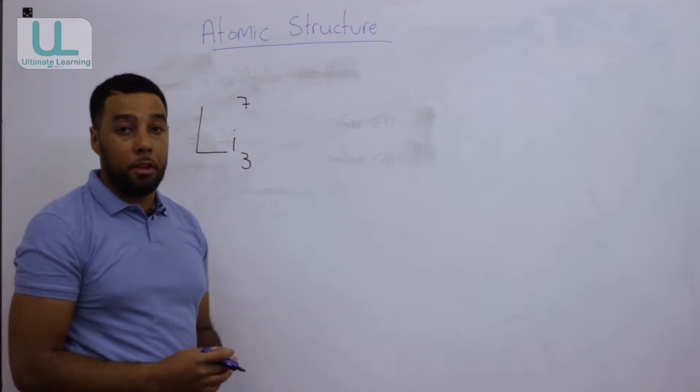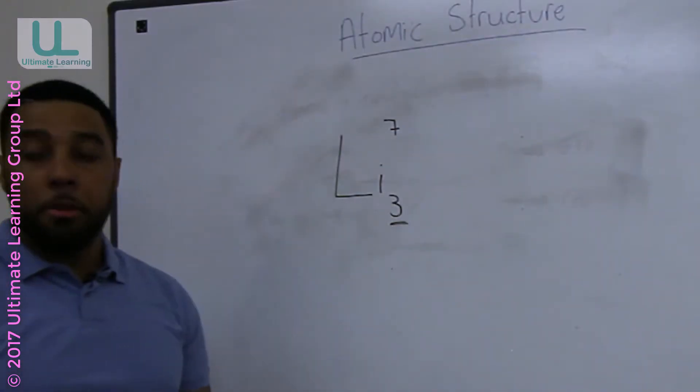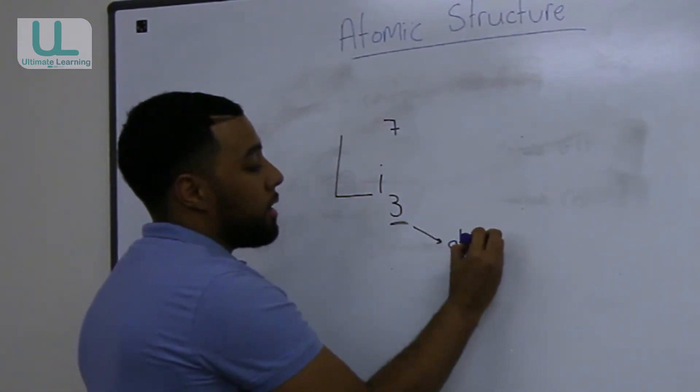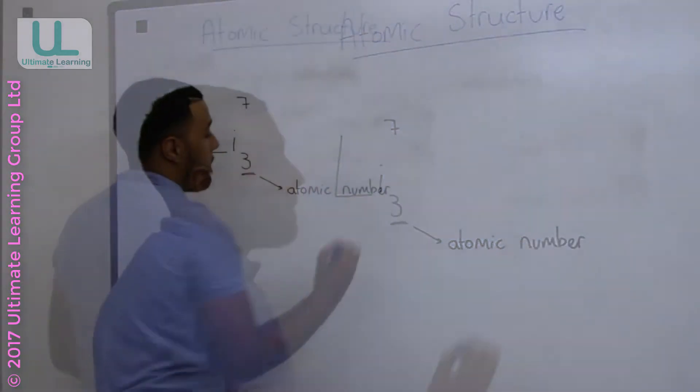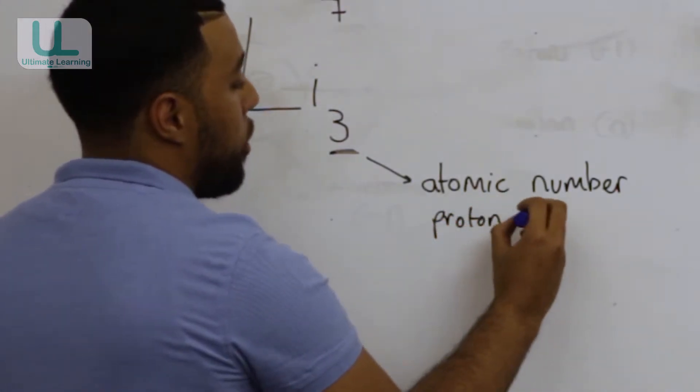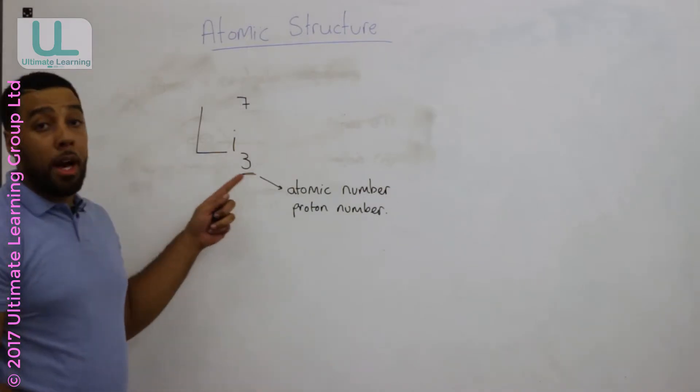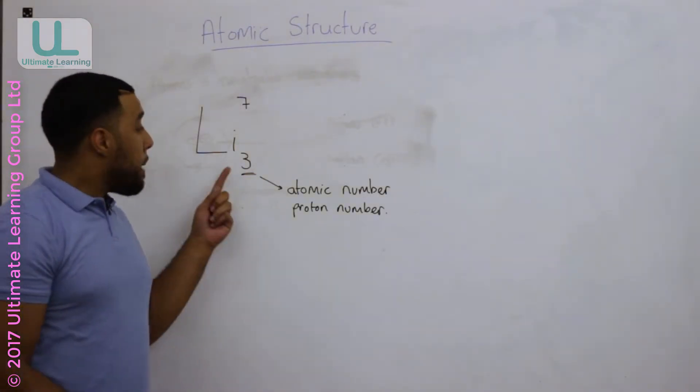Well, this number at the bottom, the three, this is called the atomic number. It's also known as the proton number or the number of protons. So lithium has three protons.